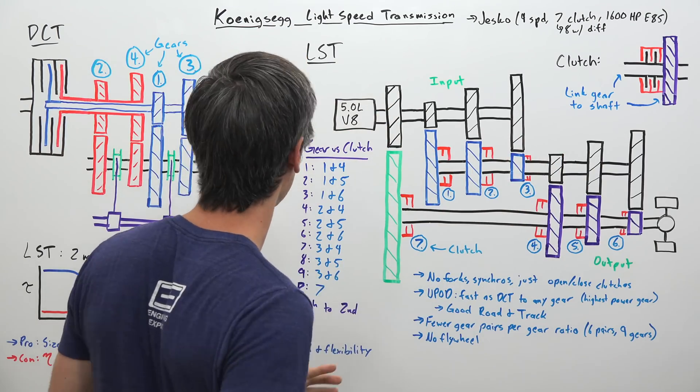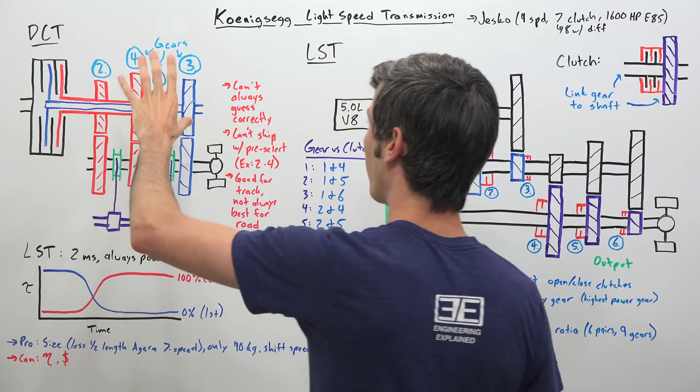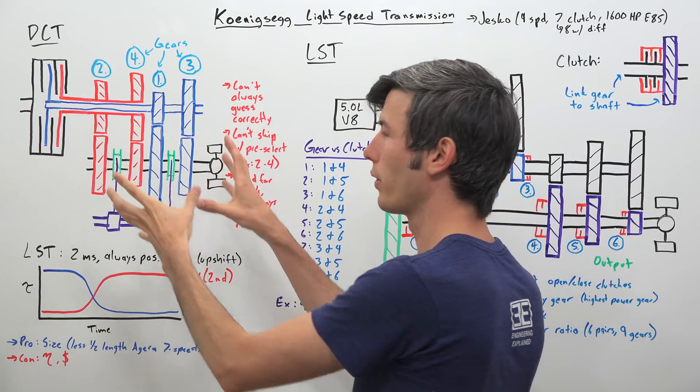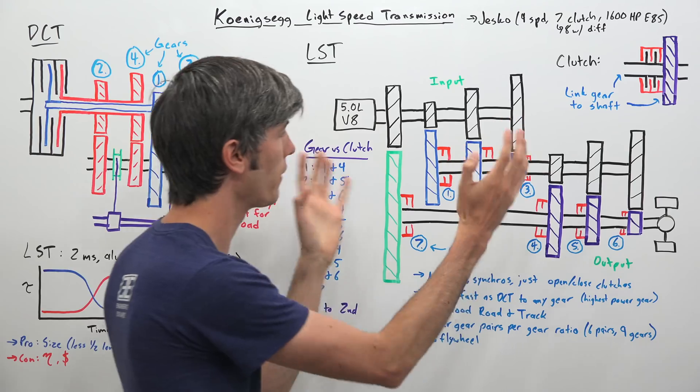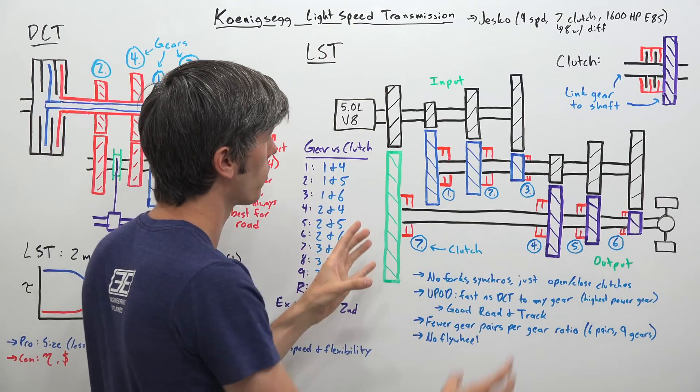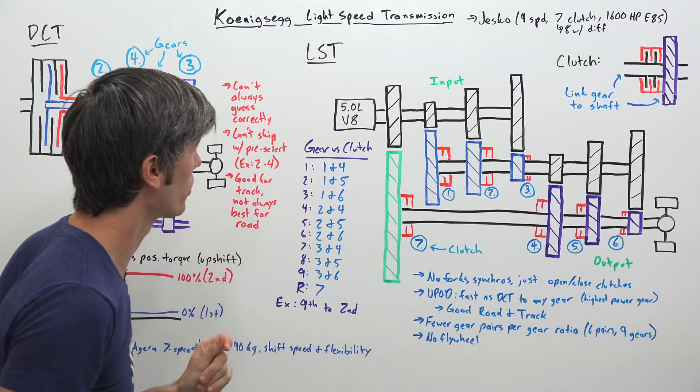This is a simplified diagram in order to understand how it works. It's not the exact layout of how the gears and everything look. Here on the left we have a simplified dual clutch transmission with just four speeds, and the reason why I drew this is to help illustrate some of the advantages that this light speed transmission has.